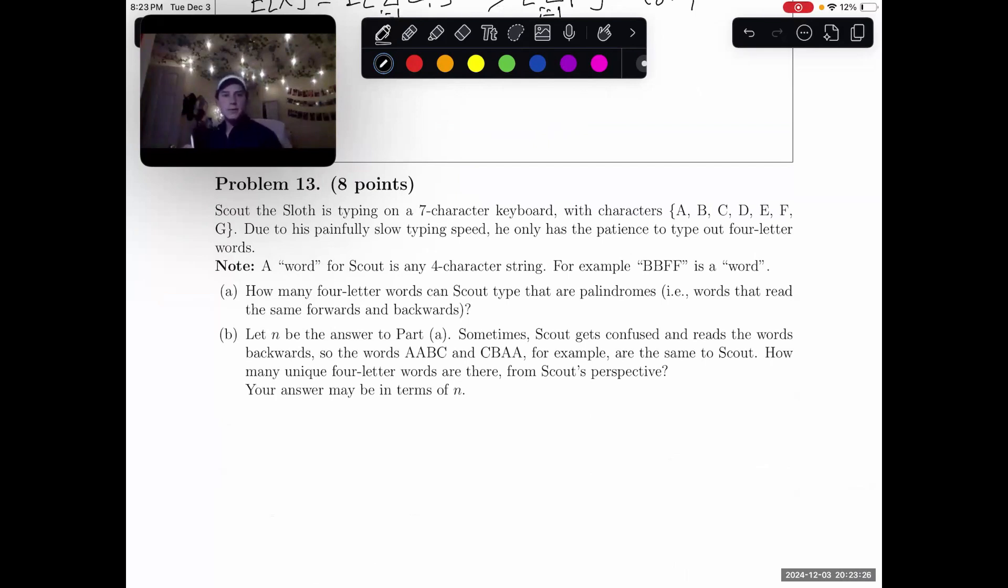Problem 13. Scout the Sloth is typing on a seven-character keyboard with characters A through G. Due to his painfully slow typing speed, he only has the patience to type out four-letter words. Note for this problem, a word for Scout is any four-character string. For instance, BBFF is a word.